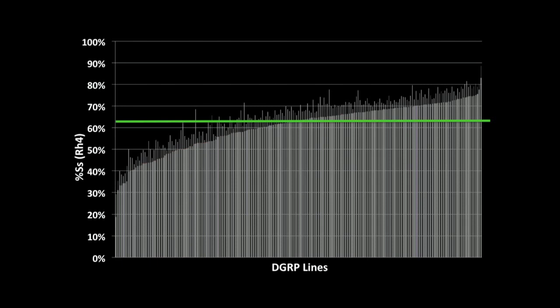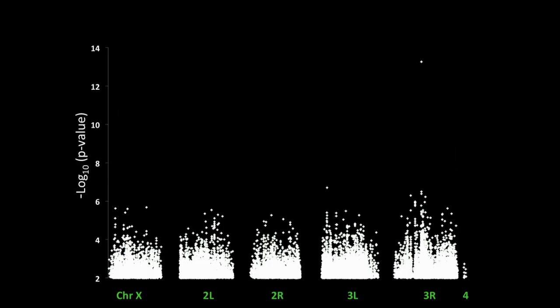So this is what the data looks like. You can see there's a wide variation. Along the x-axis, we have the DGRP lines in rank order by their spineless expression frequency. And you can see that it ranges anywhere from about 16% to 80% spineless, with this green bar representing what our lab stock would be.